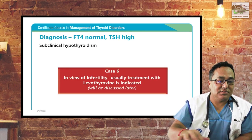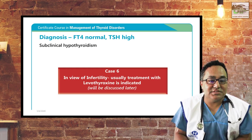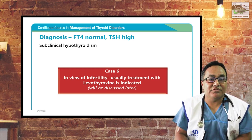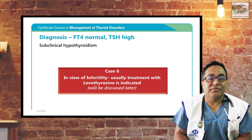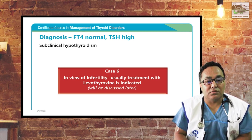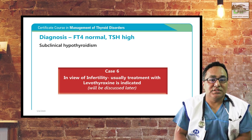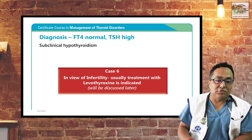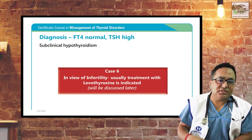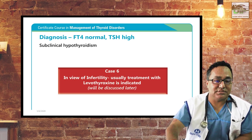This lady has subclinical hypothyroidism. Subclinical hypothyroidism is diagnosed when TSH is high and FT4 is normal, with minimal or no clinical signs and symptoms of hypothyroidism. Since this patient has infertility, we have to start treatment with thyroxine. Other indications for treating subclinical hypothyroidism will be discussed in subsequent slides.